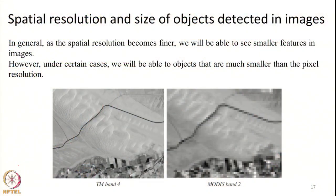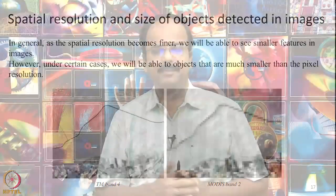Most of the time, with a pixel size of say 30 meters, we may not be able to identify objects of size say 10 meters by 10 meters. But under certain circumstances, we may be able to clearly identify objects that have a much smaller size than both the pixel size and the GIFOV size of the system.